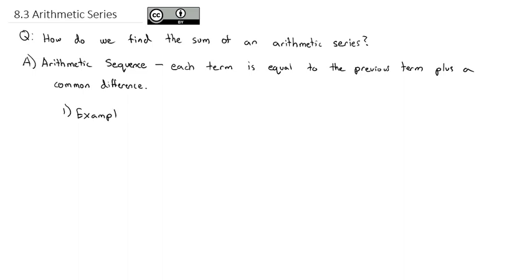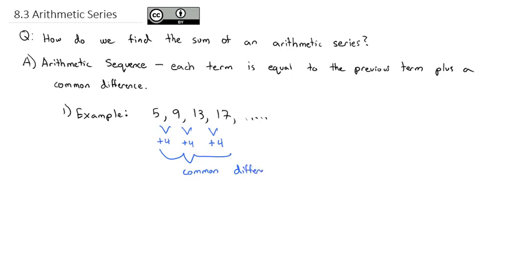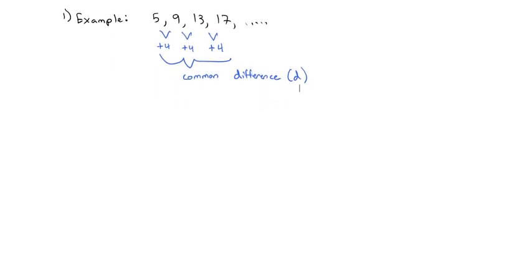For example, I might have the sequence 5, 9, 13, 17, and so on. I can see between these terms I'm adding 4 each time. That piece that I'm adding — adding 4 each time — is what we call the common difference. The difference between the numbers is always 4. That's our common difference. You'll often see the common difference represented with the letter d.